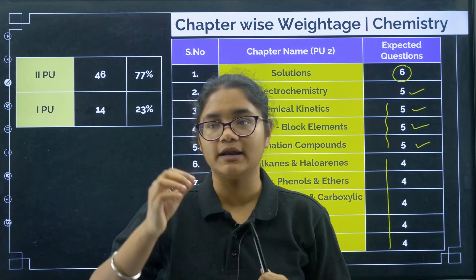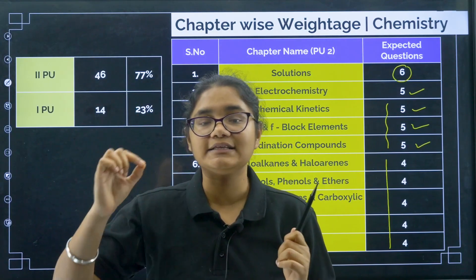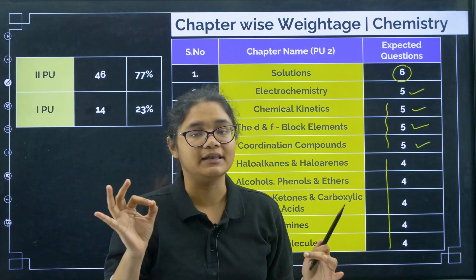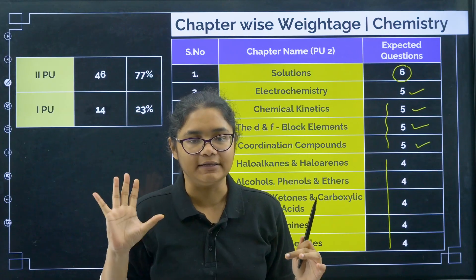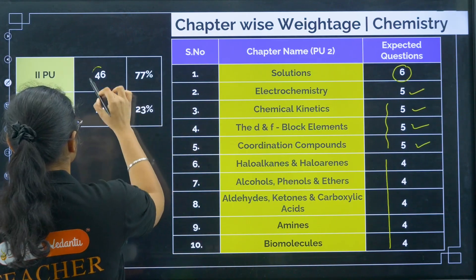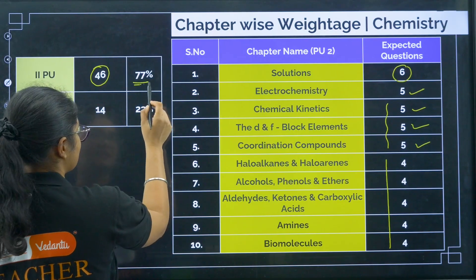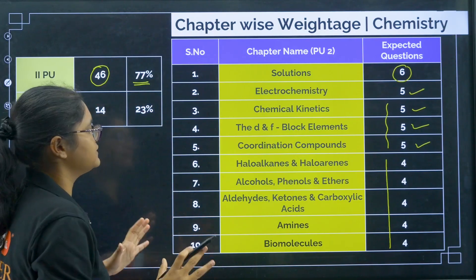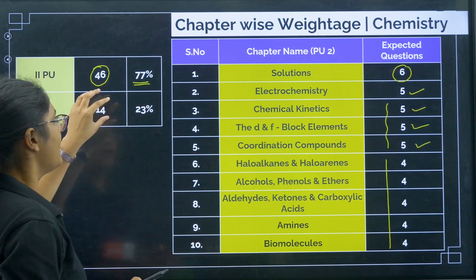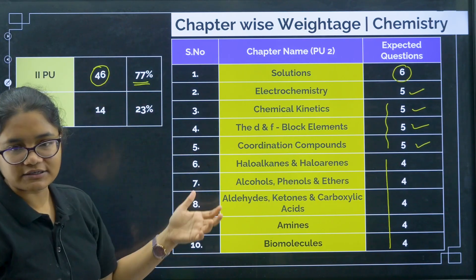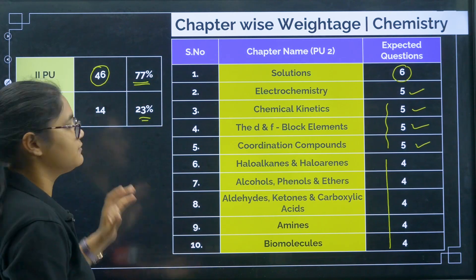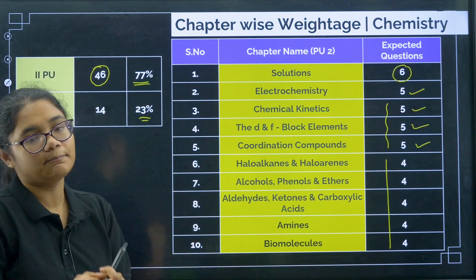So you have to read each and every chapter of PU2 very, very seriously. In general, almost 40 to 46 questions — that is 77 percent of the paper — will be from your PU2. And 14 questions, roughly 23 percent of the paper, will be from PU1.